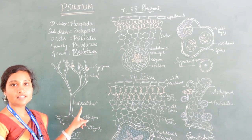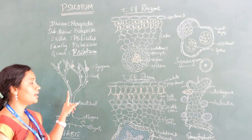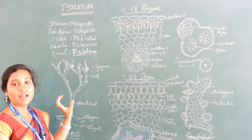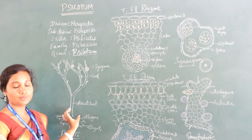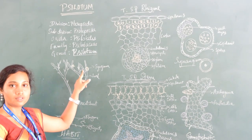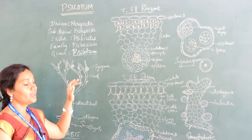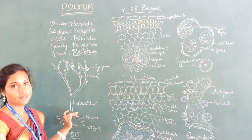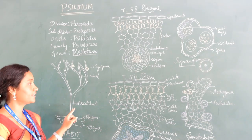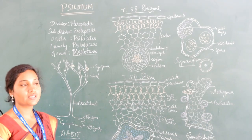The aerial shoot is green in color. It is circular towards the base and shows ridges and grooves towards the apical part. The whole aerial shoot shows dichotomous branching from the base to the apical region. The entire aerial part is green in color, showing photosynthetic character.